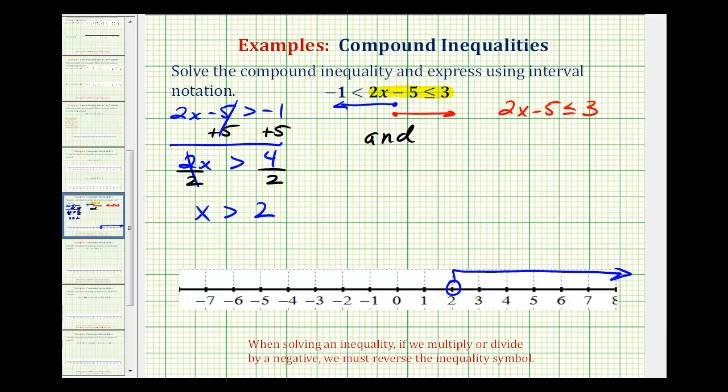Now we'll go ahead and solve the red inequality. So again, we'll start by adding 5 to both sides of the inequality. So this would be zero, so we have 2x less than or equal to 3 + 5, that's 8.